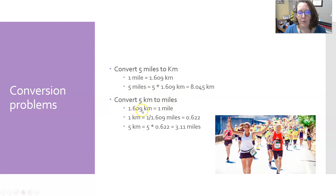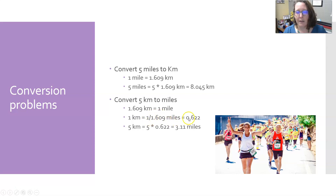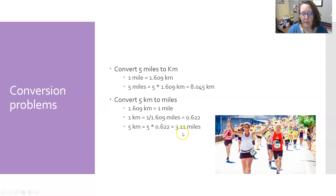Since 1.609 kilometers is one mile, you divide by 1.609 to bring it down to one kilometer, which gives 0.622 miles per kilometer. Therefore, five kilometers is five times 0.622, which is 3.11 miles. That's simply how you solve that.